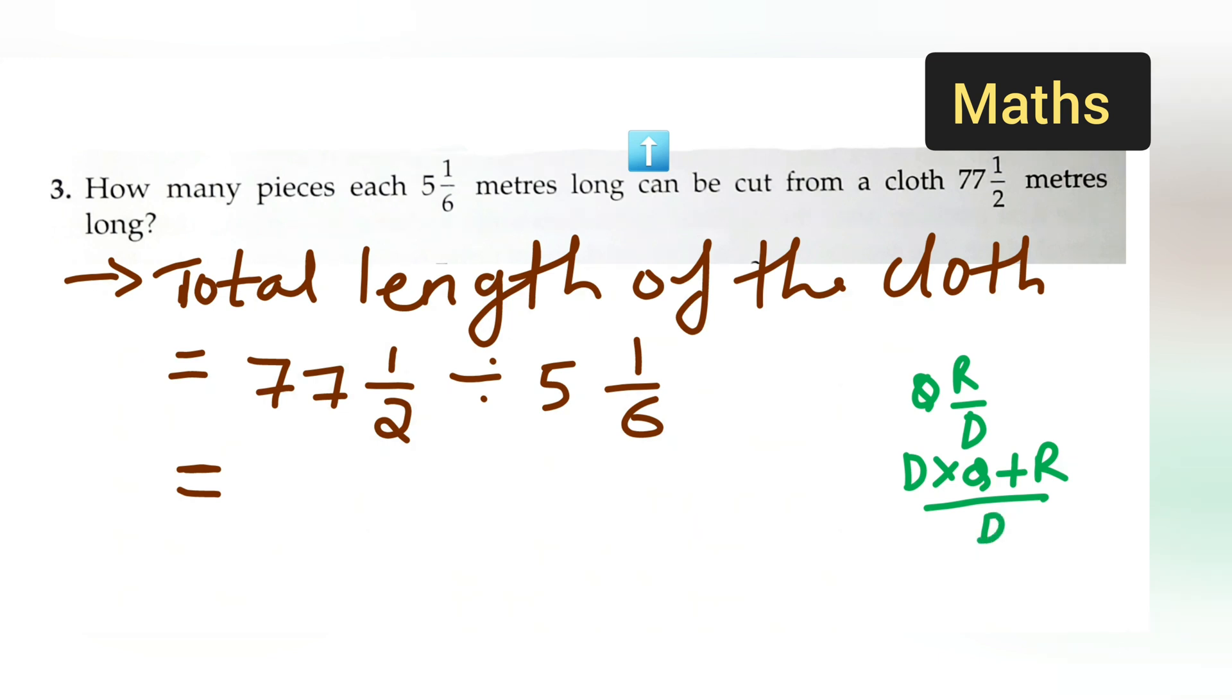Here you have to multiply this. 2 times 77 is 154 plus 1 gives you 155. So you can write 155/2 divided by, then you can divide this: 6 times 5 is 30, 30 plus 1 gives you 31/6.